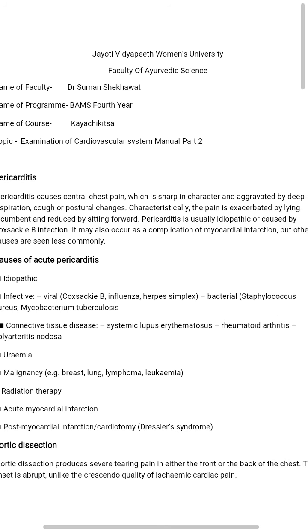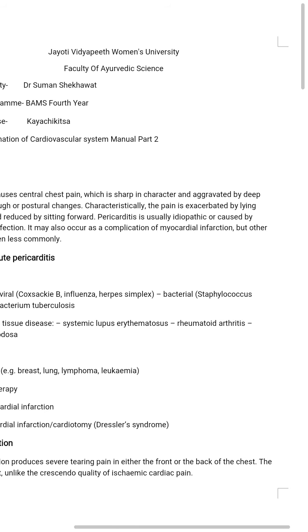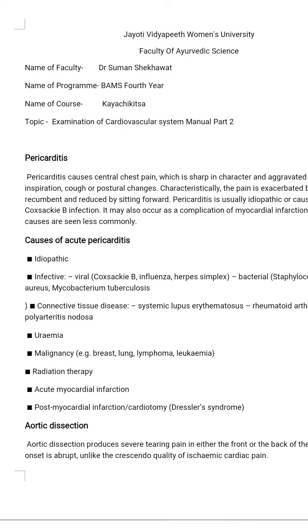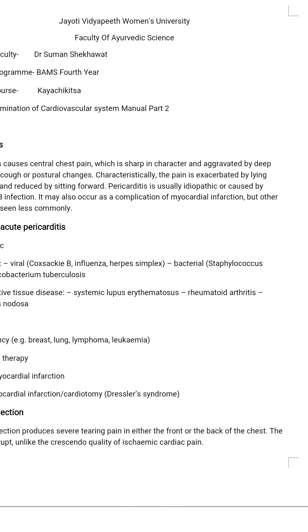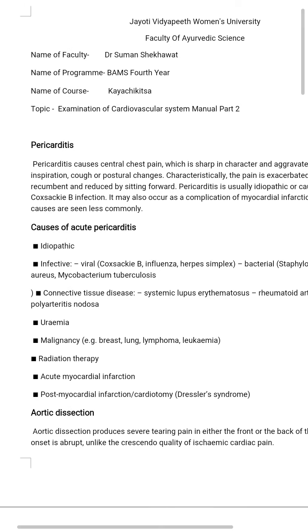Pericarditis is usually idiopathic or caused by Coxsackie B infection. It may also occur as a complication of myocardial infarction, but other causes are seen less commonly.